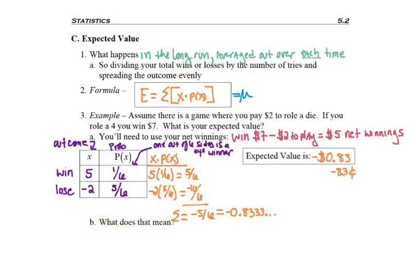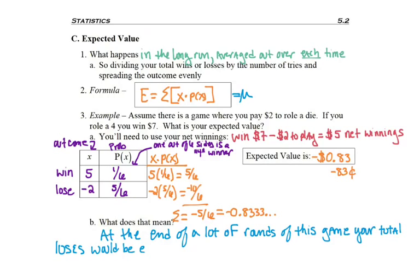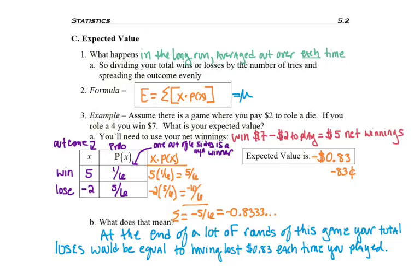What does negative 83 cents mean? At the end of a lot of rounds of playing this game, your total losses equal having lost 83 cents every time you played. So if you played 100 times, you're going to be out $83. You won a couple times, but you lost more than you won. Being out $83 is the same thing as having lost 83 cents every single time. Expected value isn't something that will really happen — you'll never really lose exactly 83 cents — but it lets you know. If you had a choice to play a game that loses 83 cents versus one that only loses 20 cents, pick that game and you either won't lose as much, or maybe you have a shot getting out of the game while you're still ahead.